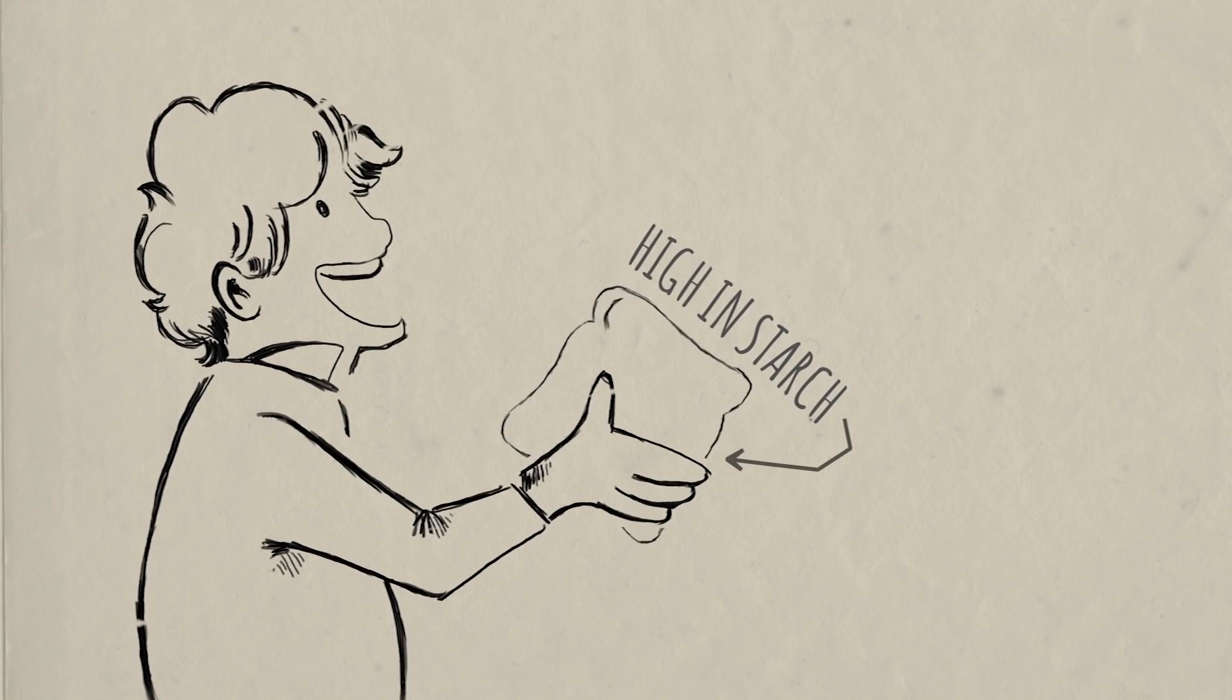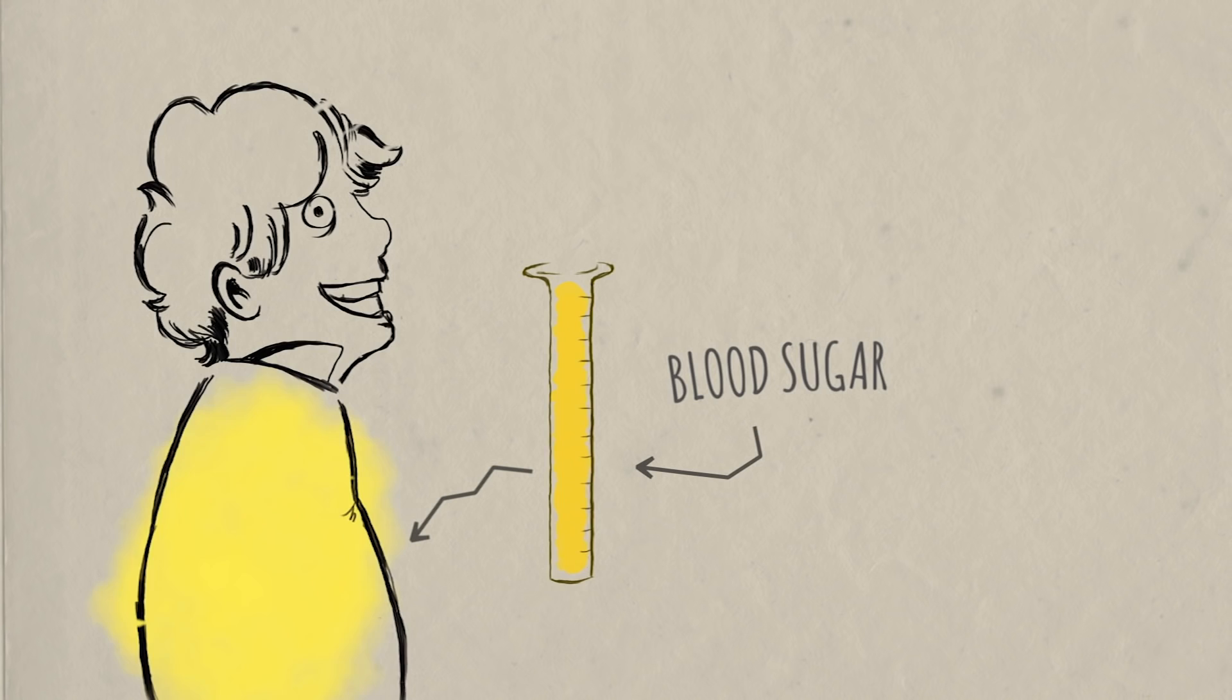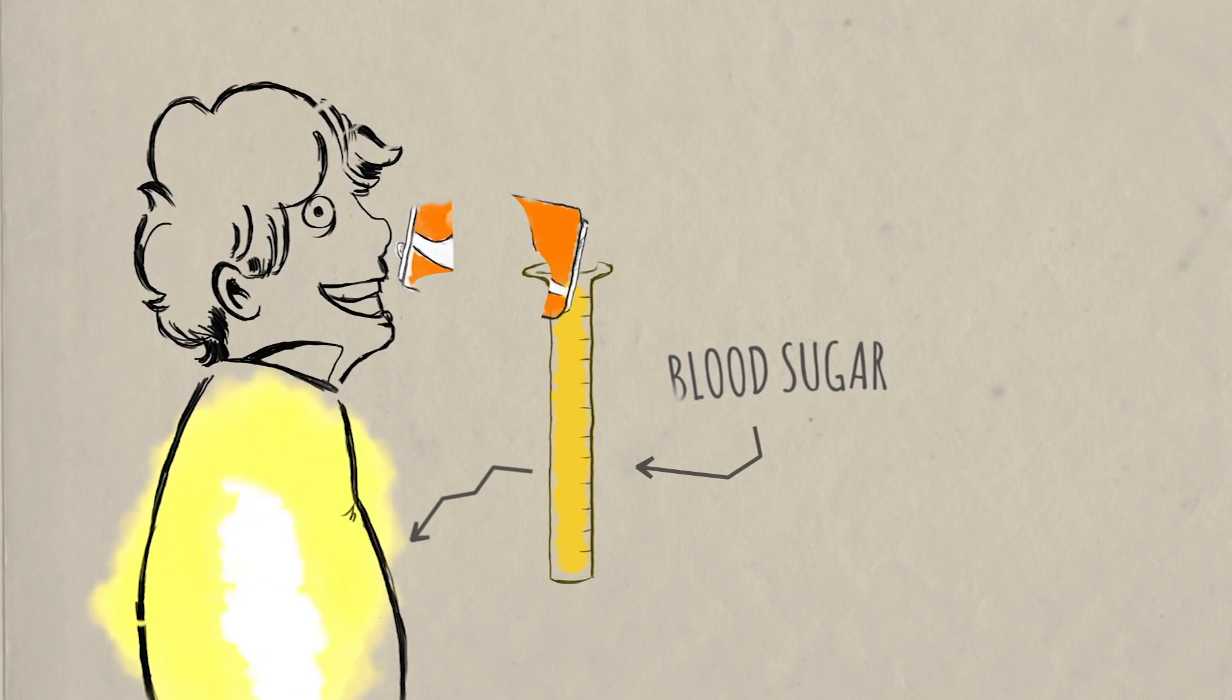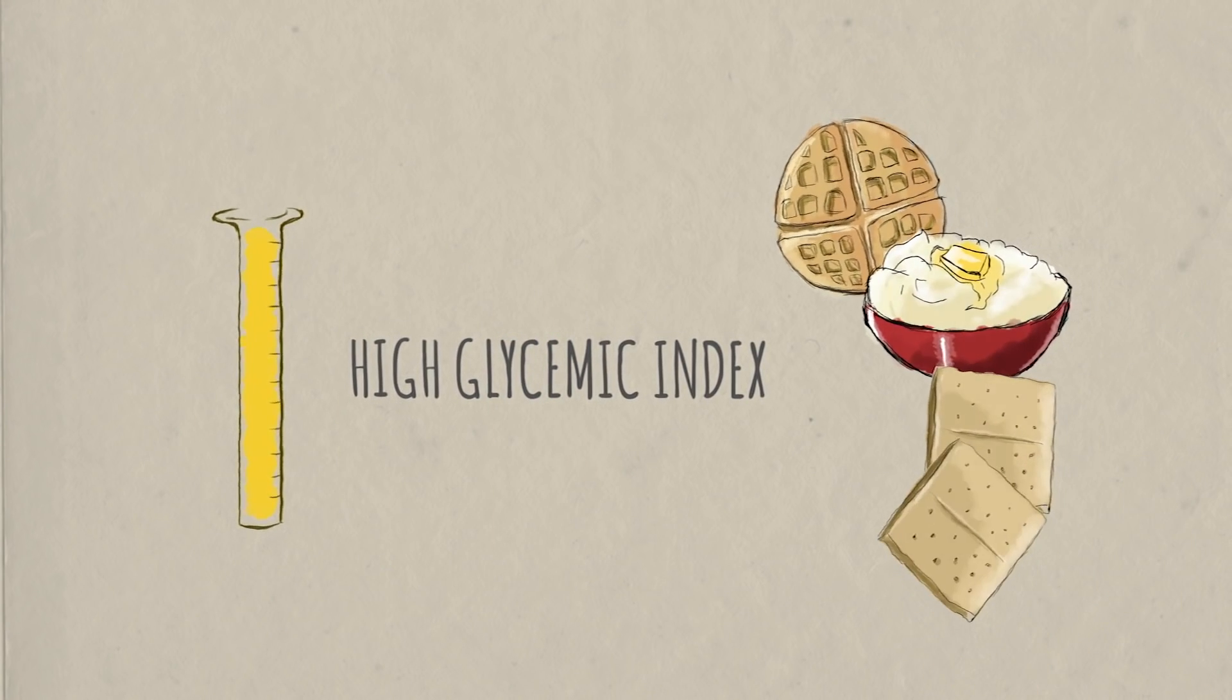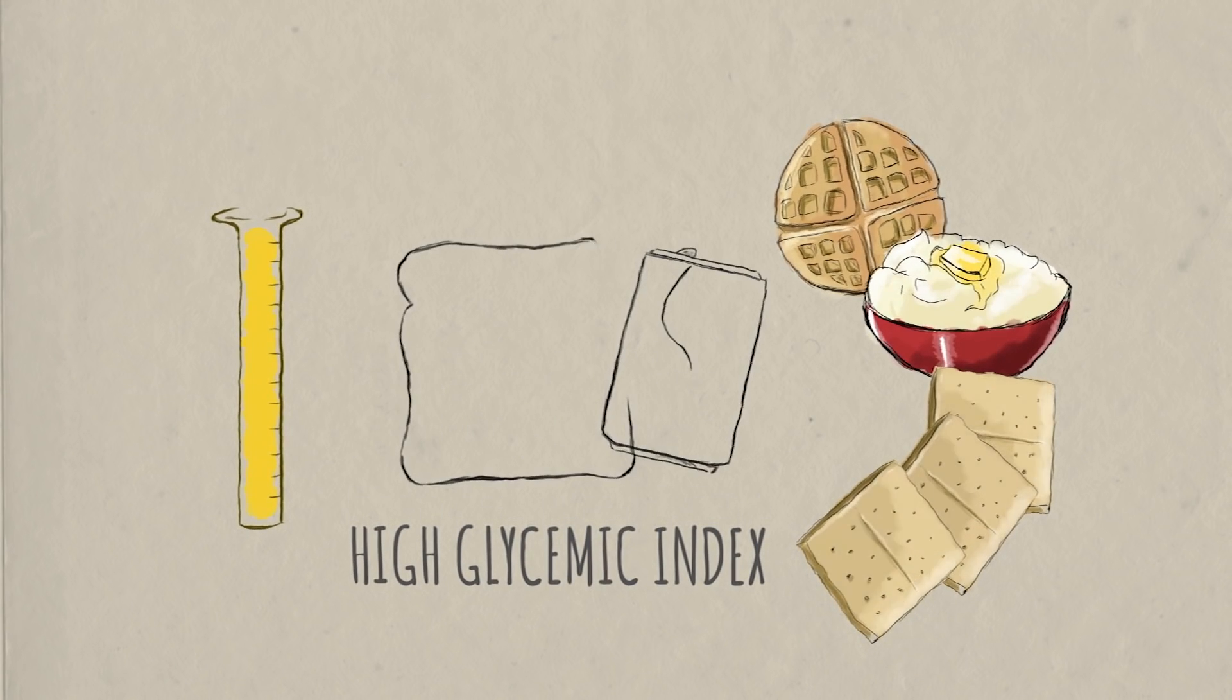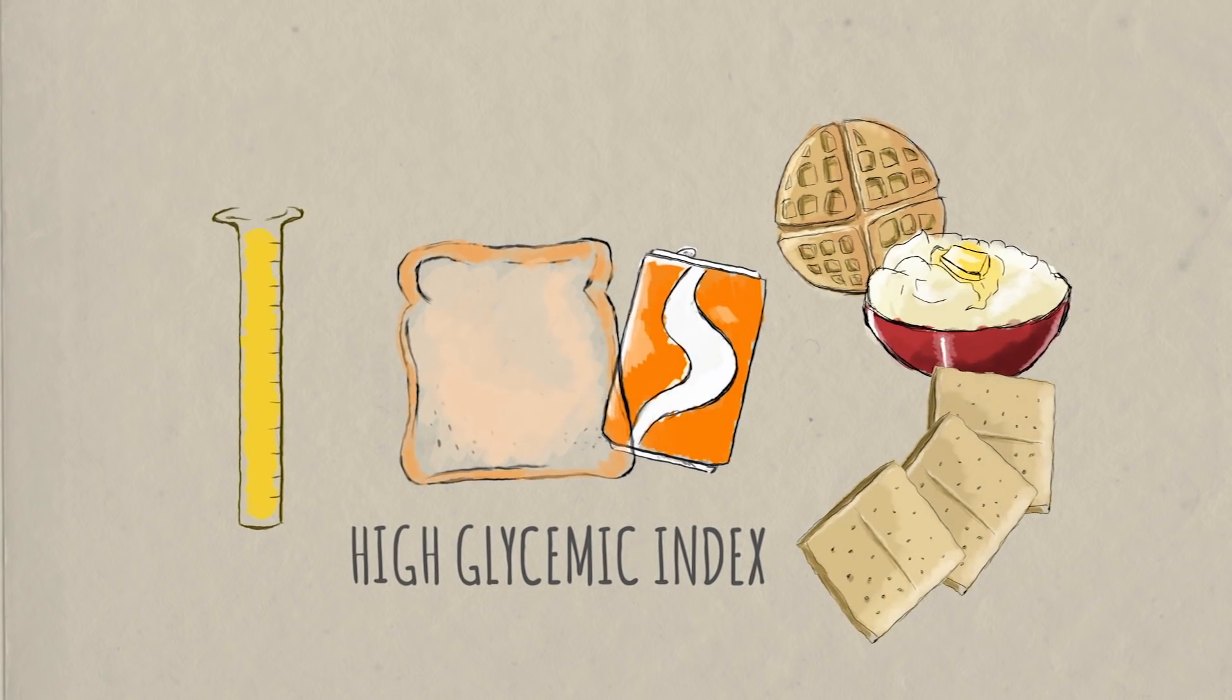So foods high in starch, like crackers and white bread, are digested easily, quickly releasing a whole bunch of glucose into your blood, exactly what would happen if you drank something high in glucose, like soda. These foods have a high glycemic index, the amount that a particular food raises the sugar level in your blood. Soda and white bread have a similar glycemic index because they have a similar effect on your blood sugar.